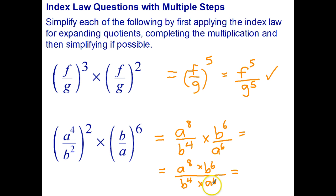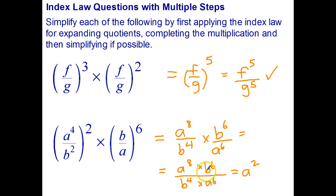A to the eighth divided by A to the sixth is A to the eight minus six, which is A to the power of two. B to the sixth divided by B to the fourth is B to the six minus four, which is two. So all of that simplifies to A squared times B squared.